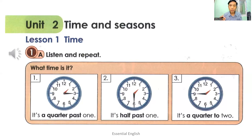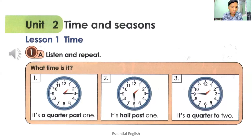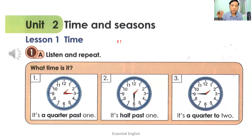In this lesson, you are going to learn how to use 'a quarter past', 'half past', and 'a quarter to'. Please look at the first picture. You can see a minute hand and an hour hand on the face of a clock. The hour hand is pointing to one, and the minute hand is on number three. It means it's a quarter past one.